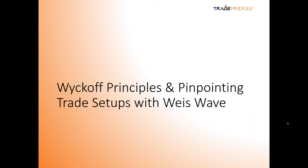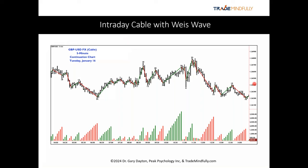Let's take a look at Wyckoff principles and how we pinpoint trade setups with the Weiss Wave. Here's cable — the British pound to the US dollar forex cross rate — on a five-minute chart. I've got the price bars with the Weiss Wave superimposed over them, and underneath is wave volume. So starting here, we can see a wave down with associated volume, then a wave up with its volume, and then another wave down. At the turns, wave volume is plotted — this is in hundreds, so 2,400 contracts, 1,900, 400, and so on.